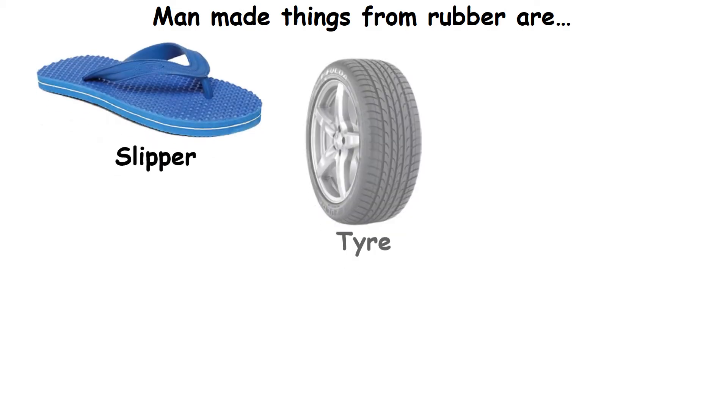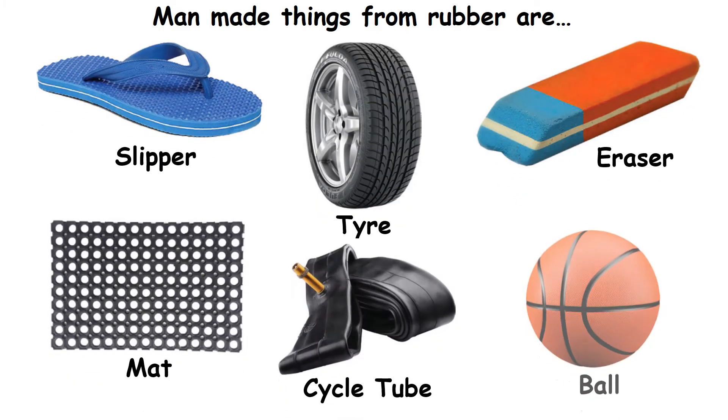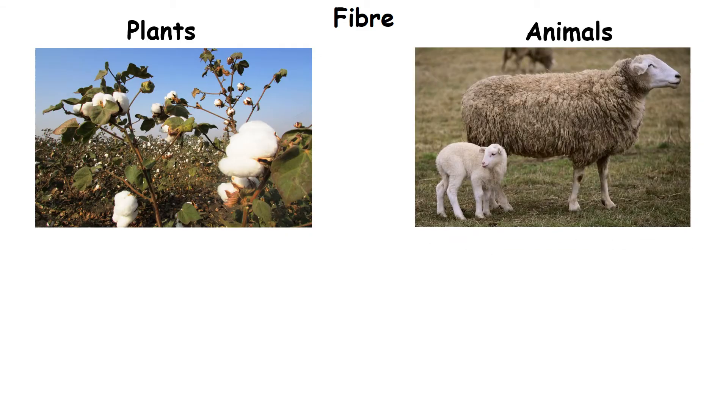Man made things from rubber are slipper, tire, eraser, mat, cycle tube and ball. Fiber is a material obtained from both plants and animals.